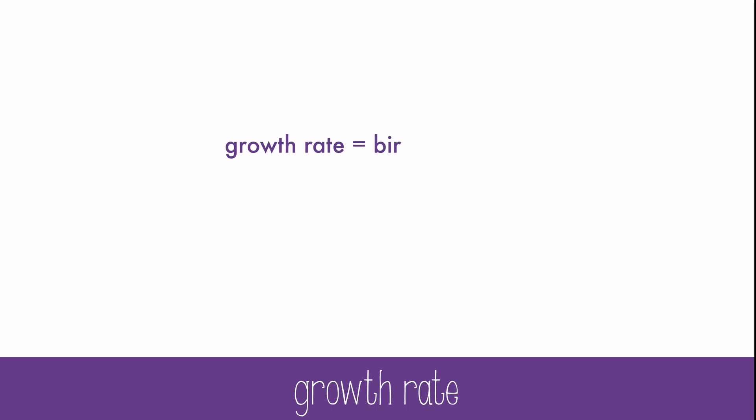The simple way to find out if a population is growing is to calculate the births minus the deaths. If the number is positive, the population is growing. If the number is negative, the population is shrinking.